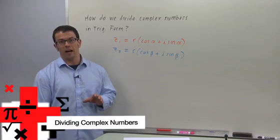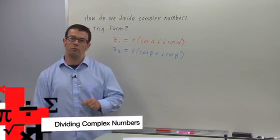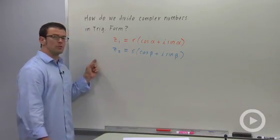I'm going to assume you already know how to divide complex numbers when they're in rectangular form, but how do you divide complex numbers when they're in trig form?